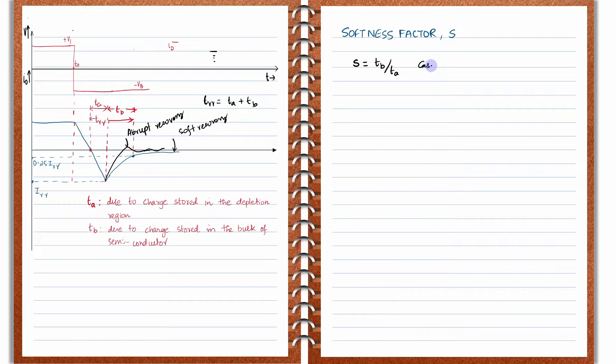In case number one, where TB is almost equal to TA, you can clearly see from the definition of the softness factor that S will be approximately equal to 1. When the softness factor is roughly equal to 1, such type of recovery is called soft recovery. In the explanations of reverse recovery that we have seen till now, we are usually keeping TA and TB almost the same value, so those were soft recovery cases. You can see the recovery is very gradual and smooth here.